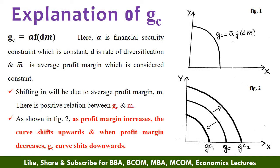Here, A-bar is the financial security constraint, and D and M-bar we have already discussed. As the financial security of the firm is fixed in this case, as it depends upon the management attitude and decisions, shifting of GC will be only due to the average profit margin, i.e. M. So, there is a positive relationship between GC and M in this case. As shown in figure 2, as profit margin increases, the curve will shift upwards. And when the profit margin decreases, the GC curve will shift downwards.